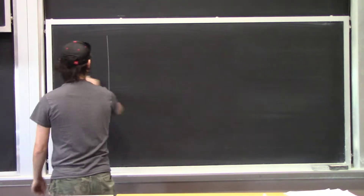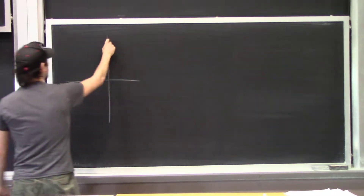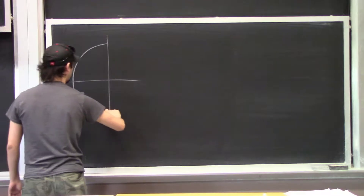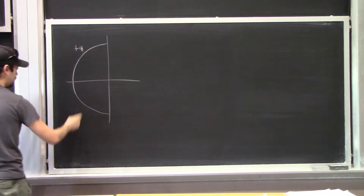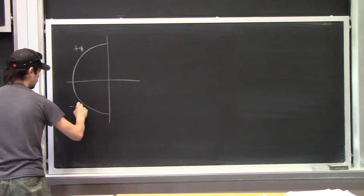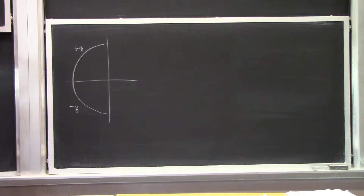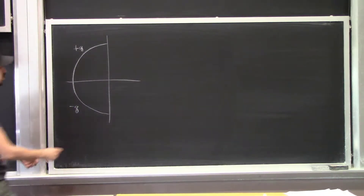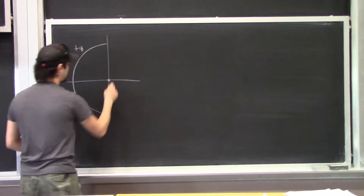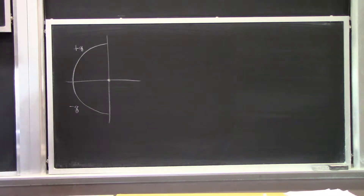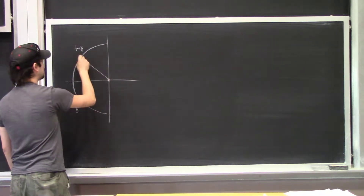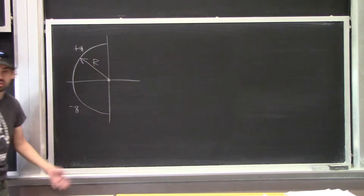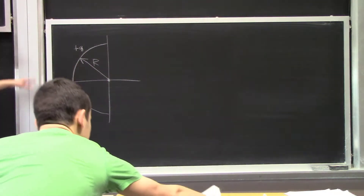The question said that we had some arc of a circle where we have some plus Q up here and some minus Q at the bottom. We wanted to find what the electric field was at the center of the circle. I said this was some radius of R or radius A, just some constant.